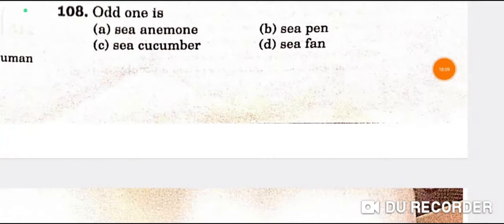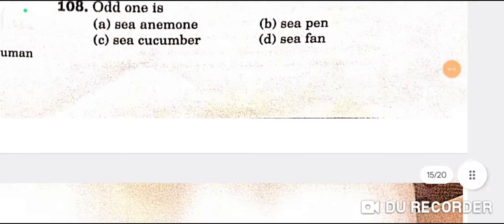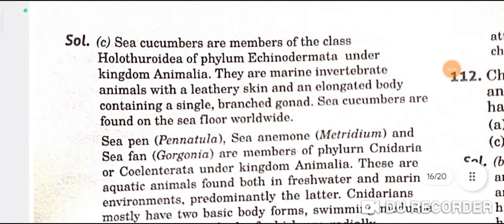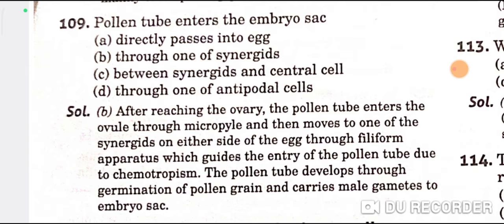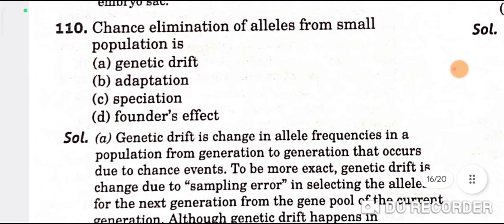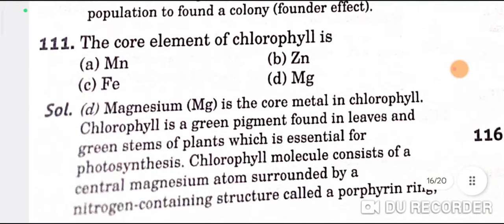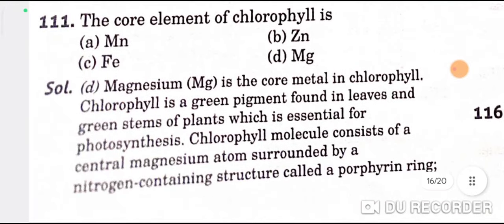The odd one out is cucumber — C is the correct option. The pollen tube enters the embryo sac through one of the synergids — B is the correct option. Chance elimination of alleles from a small population is called genetic drift — A is the correct option. The core element of chlorophyll is magnesium — B is the correct option.